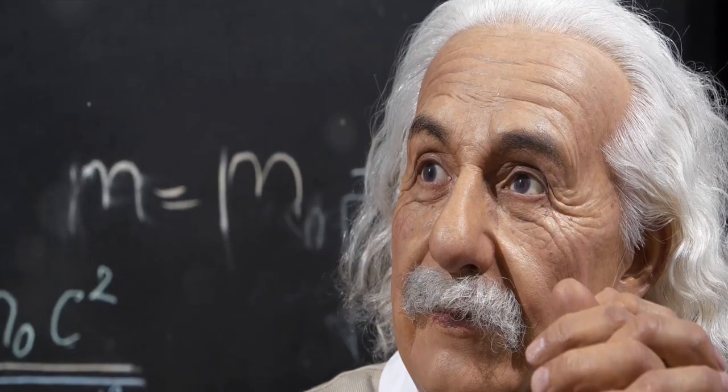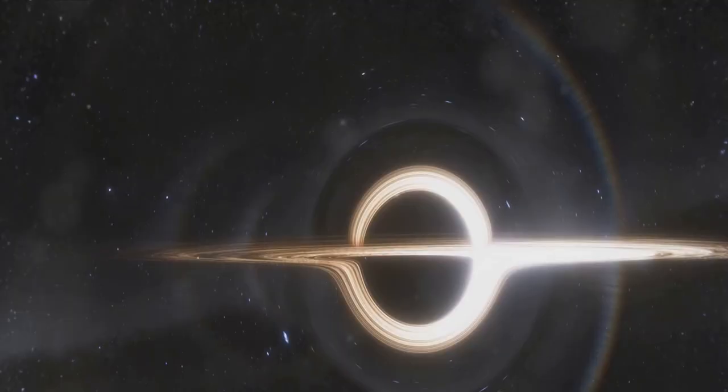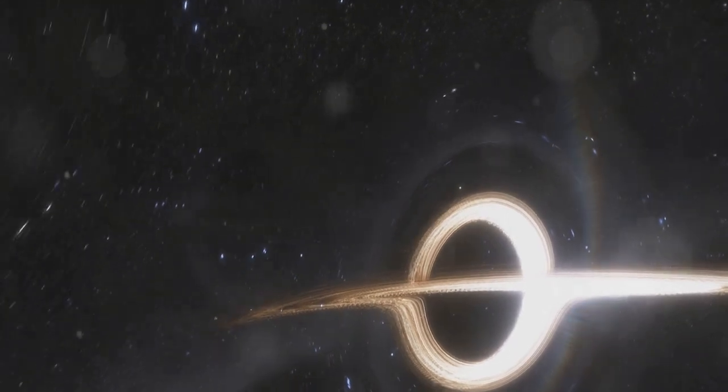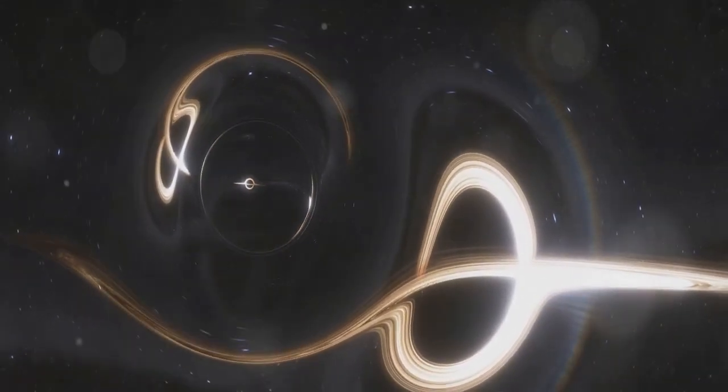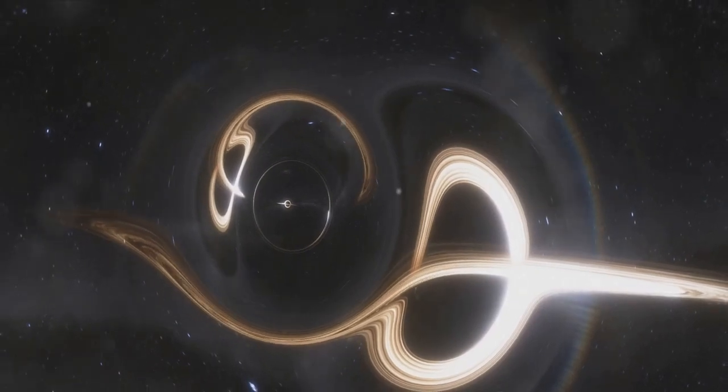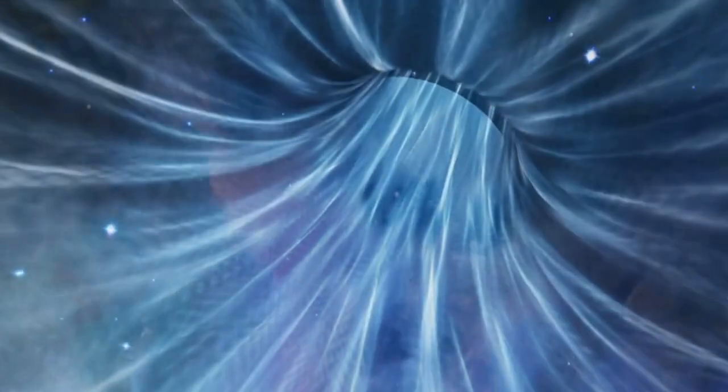The idea of these cosmic bridges didn't just appear out of nowhere. It comes from Albert Einstein and Nathan Rosen's interpretation of the general theory of relativity. This groundbreaking theory, published in the early 20th century, revolutionized our understanding of gravity, describing it not as a force but as a curvature of space-time caused by mass and energy.